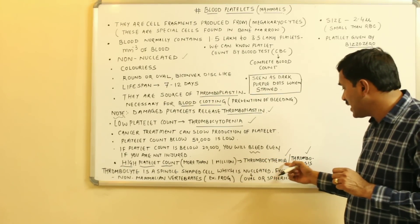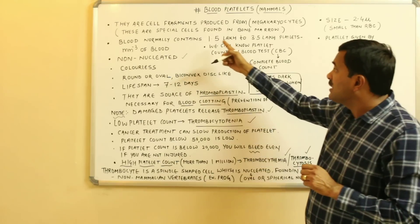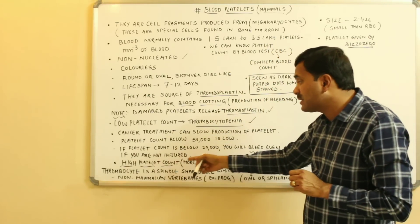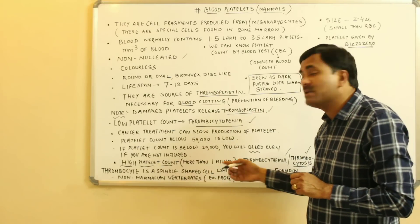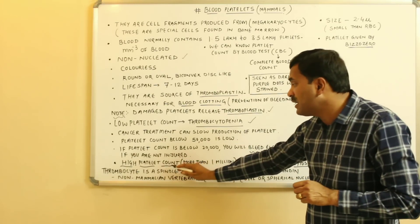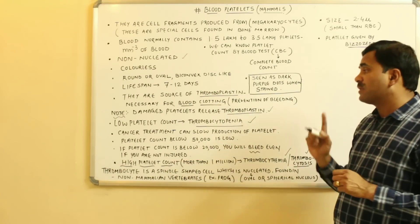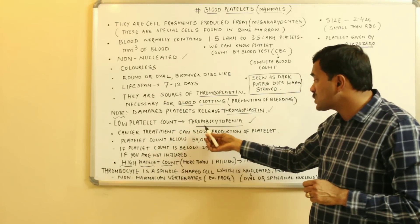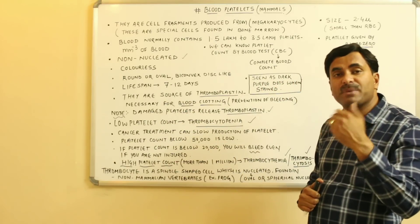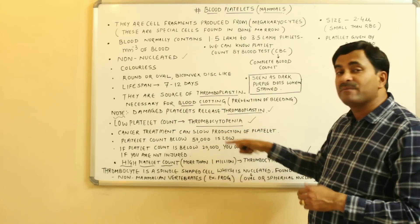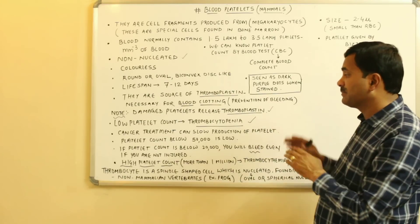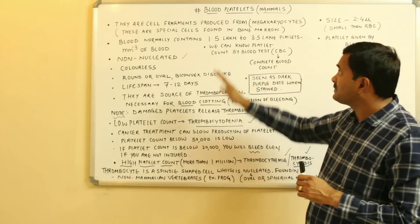High platelet count is called thrombocytemia or thrombocytosis. The normal count is 1.5 to 3.5 lakh per cubic mm, but if the platelet count is around 1 million (10 lakh), it falls under high platelet count. Remember that cancer treatments such as chemotherapy and radiotherapy can slow down the production of platelets.